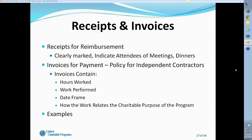For receipts and invoices related to activity codes, they need to be clearly marked. Most individuals don't indicate on the back of the receipt who they met with or the purpose of a dinner — you want to write that context on the back, such as 'met with potential donors' or 'fed children from the reservation.' This helps both you when filling out the form and UCP when providing information to our auditors. For invoices for payment, particularly for independent contractors, invoices should contain: hours worked, work performed, date frame, and how the work relates to charitable purpose.